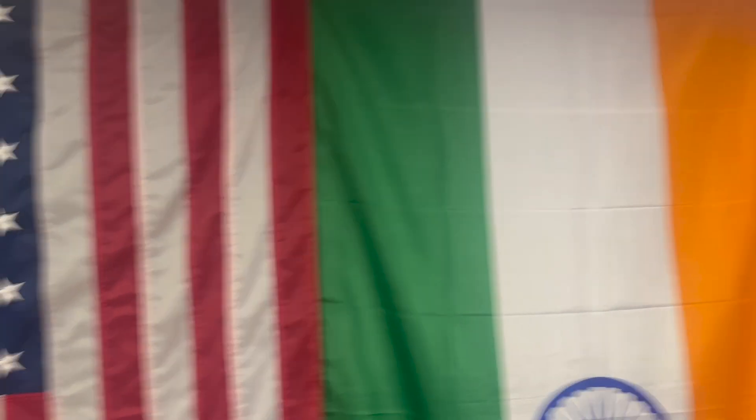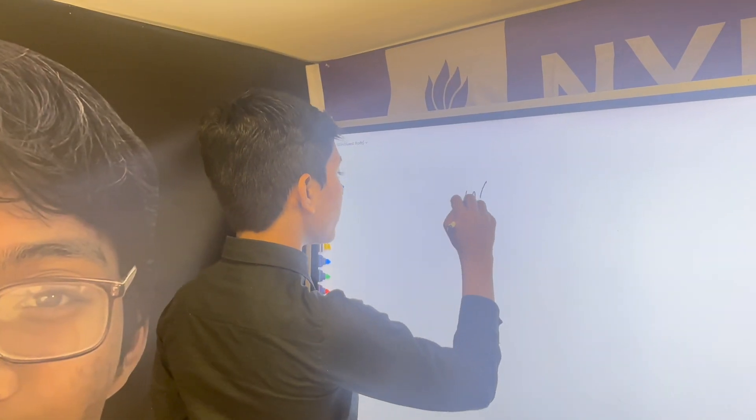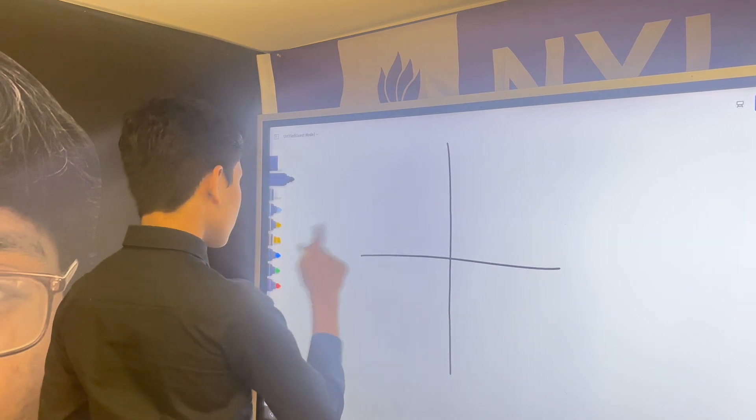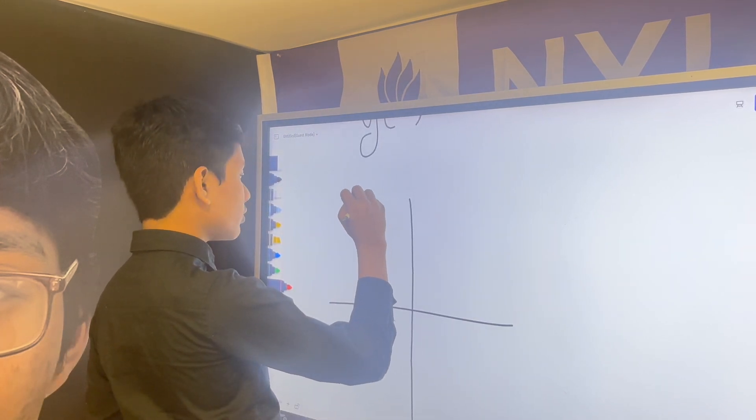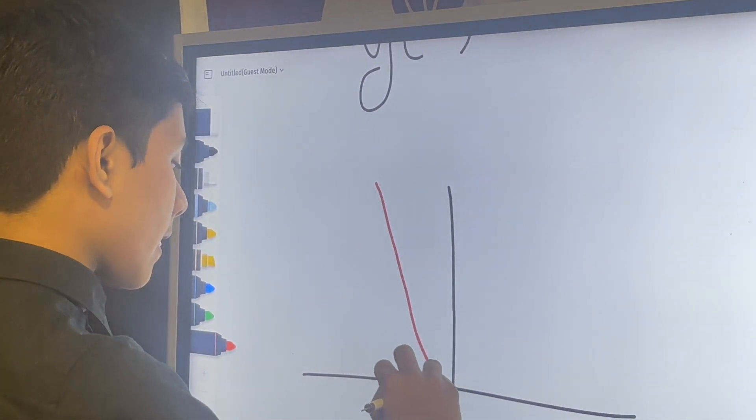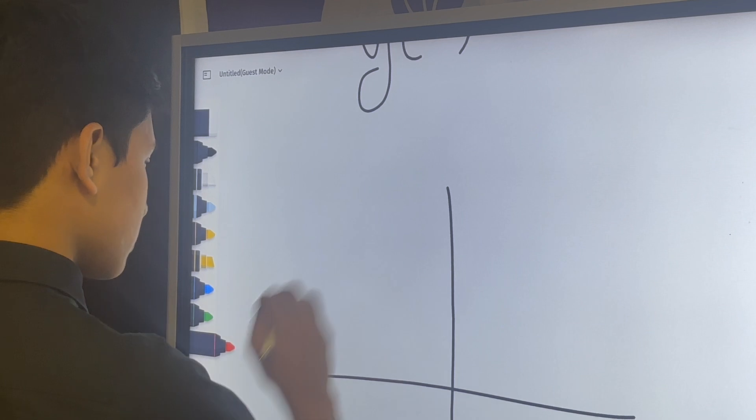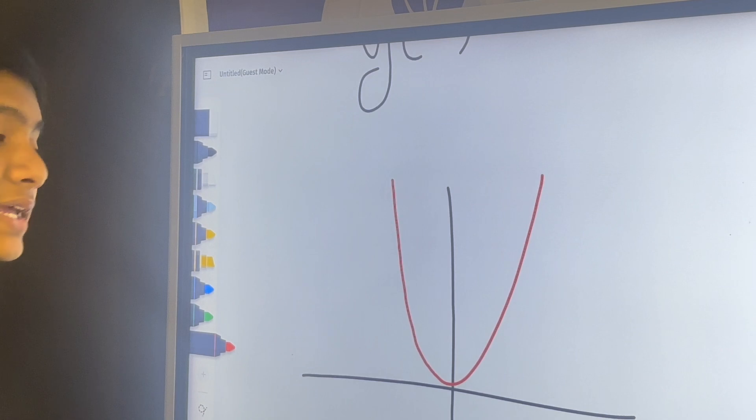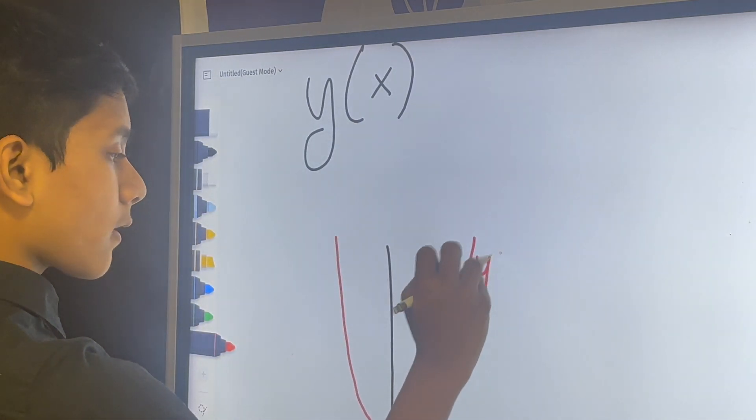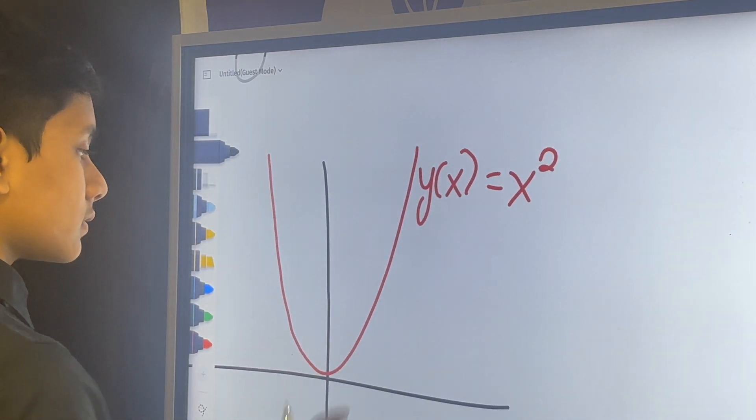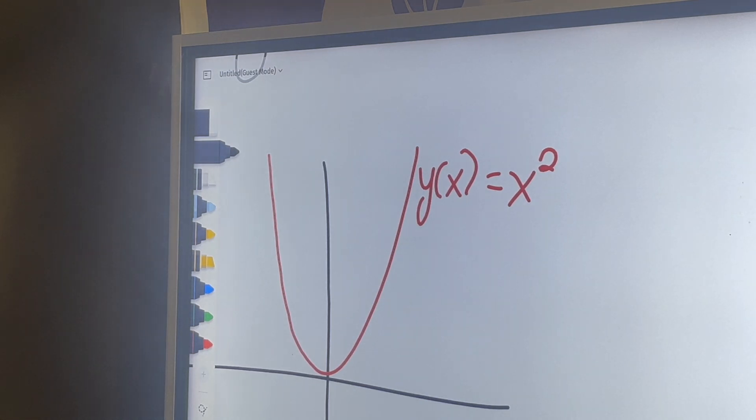So, how do we find the arc length of a parametric y of x? So, if we have a function, like y of x is equal to x squared, looks something like this. Everybody understands it. Everybody knows it. So, everybody can use this one as an example to understand the parametrize.